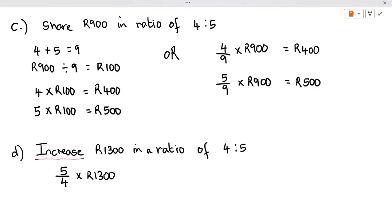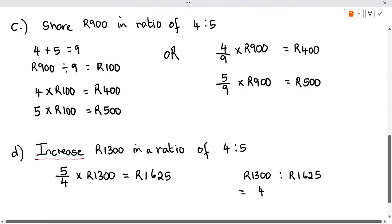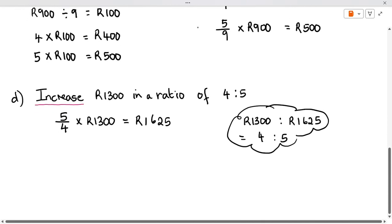We're going to go 5 divided by 4 times 1,300. And here we end up with 1,625. Now, if you took this and you punch this into a calculator and you said 1,300 to 1,625, this answer would get you back to 4 to 5, back to the original ratio. So you test your answer to see if your answer is correct. So that was increase.